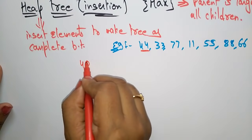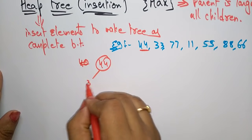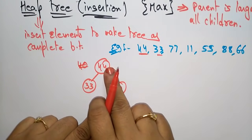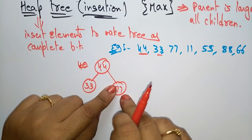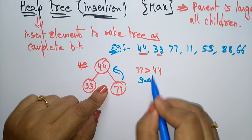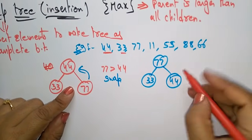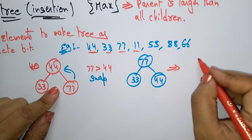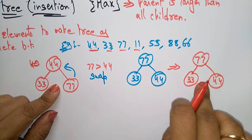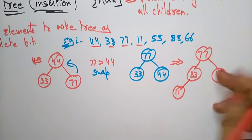First insert 44. In a binary tree, always insert starting from the left side. Next insert 33, then 77. Now check the condition — the parent should be greater than the children. 44 is less than 77, so swap them. Now the tree is 77, 33, 44. Insert next element 11. Since 33 is larger than 11, no need to swap.